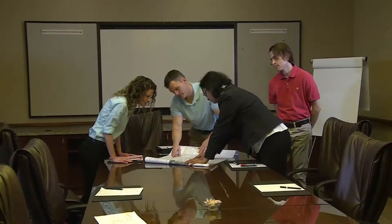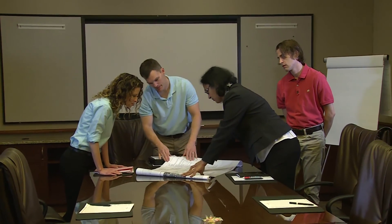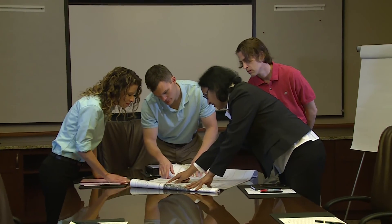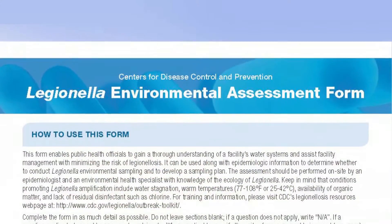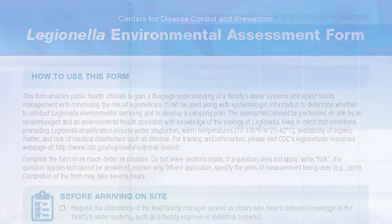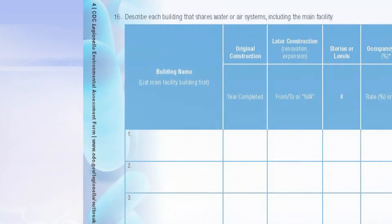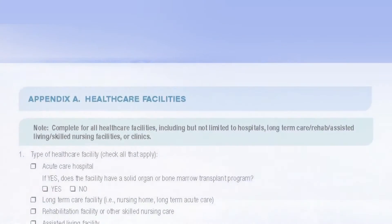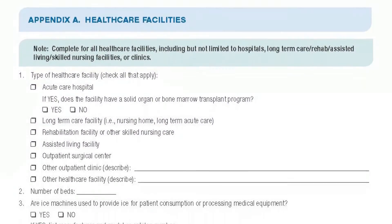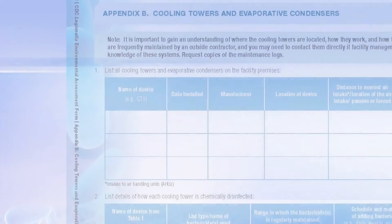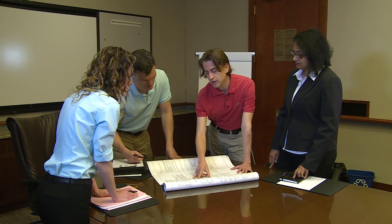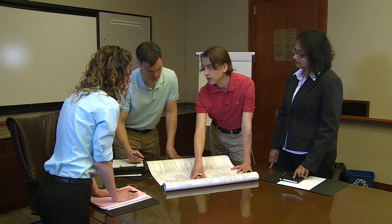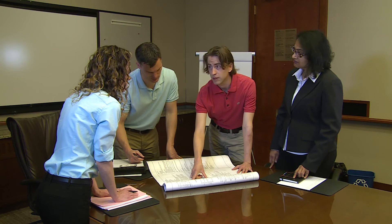An environmental assessment is a necessary step for a legionellosis outbreak investigation. Careful completion of this form will help you recognize potential sources of transmission, identify red flags in operation and maintenance, determine whether sampling is needed, and if so, draft a sampling plan, which is discussed in the next video in this series.